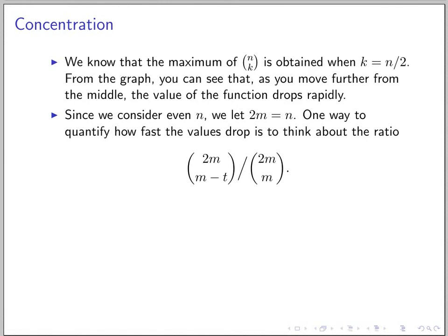In this part, we look at how most of the value of N choose K is concentrated in the middle. We look at how the function changes in the middle. Previously, we proved that the maximum of the binomial coefficient is at the case when K equals N over 2. From the graph, you can see that most of the values are here, and then it drops pretty quickly down to zero. In this part of the lecture, we look at how that works.